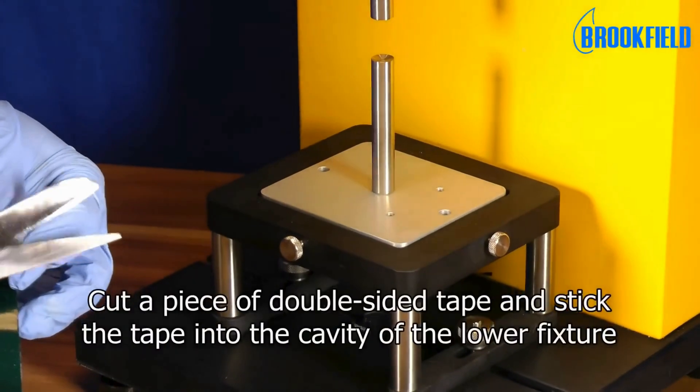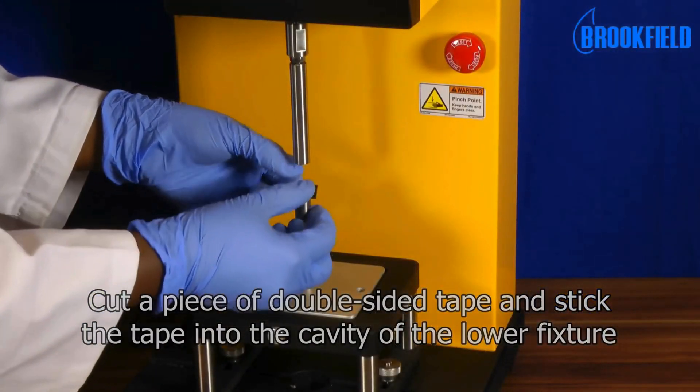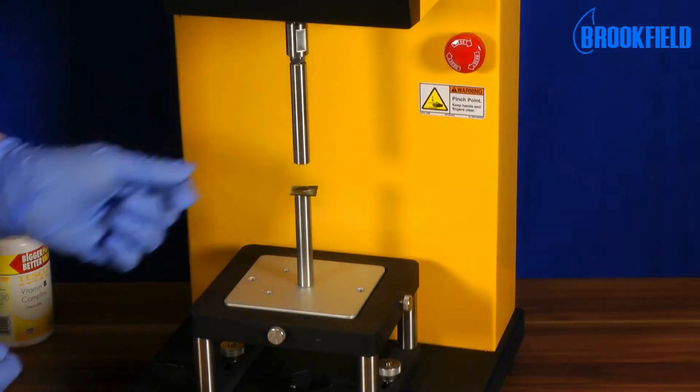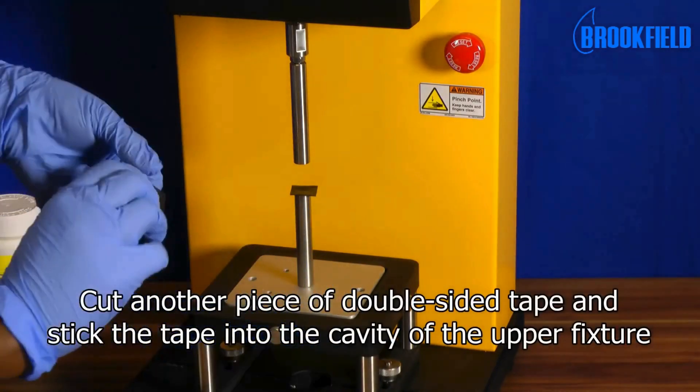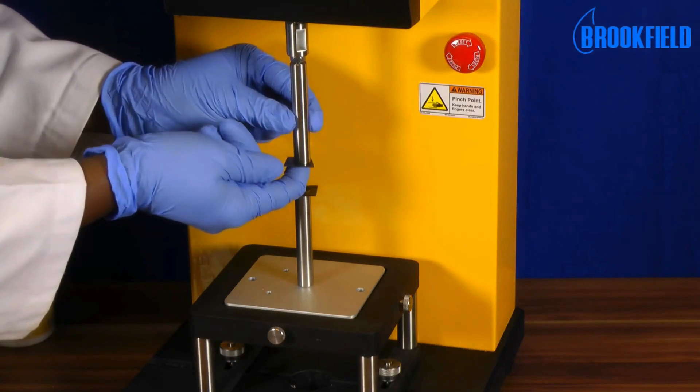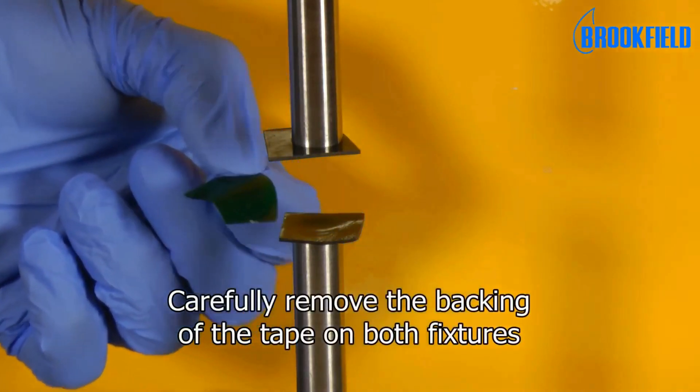Cut a piece of double sided tape and stick the tape into the cavity of the lower fixture. Cut another piece of double sided tape and stick the tape onto the cavity of the upper fixture. Carefully remove the backing of the tape on both fixtures.